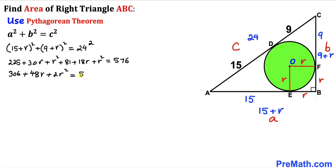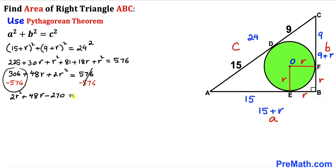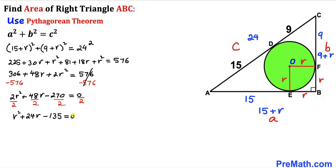Subtracting 576 from both sides: 2r² + 48r - 270 = 0. Dividing the entire equation by 2 gives us: r² + 24r - 135 = 0, which is our quadratic equation.